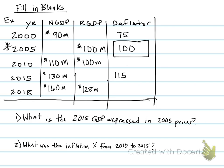To find the real GDP for 2000, I go back to my formula and take my nominal GDP of $90 million, divide that by my deflator of 75, times 100, and that gives me an answer of $120 million. So the real GDP for 2000 is $120 million.